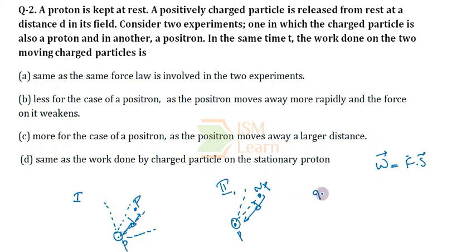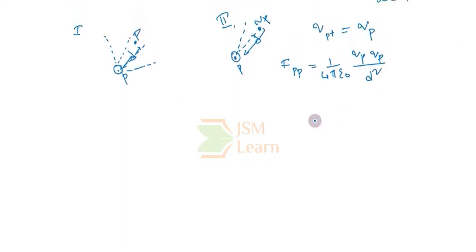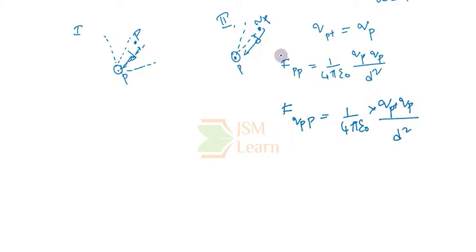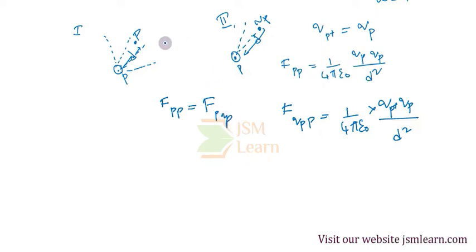The charge of the proton and the charge of the positron are both equal. So the electrostatic force in the first case — between proton and proton — is (1/4πε₀) × (charge of proton × charge of proton) / d². Similarly, the electrostatic force between proton and positron is (1/4πε₀) × (charge of positron × charge of proton) / d². Since both charges are equal, the electrostatic force acting on the moving charged particle is equal in both cases.